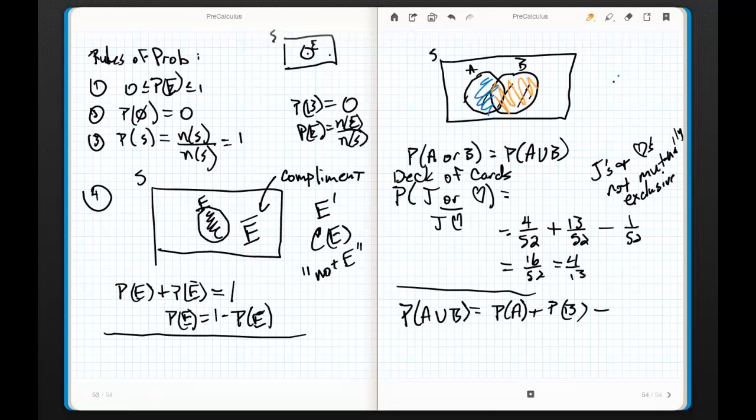The problem is this area in here, which is the intersection, we already talked about that, that's A intersect B, that got counted twice. So, I subtract out one of those countings, minus the probability of A intersect B. That's how it works.